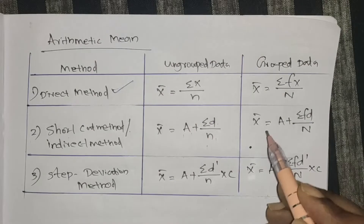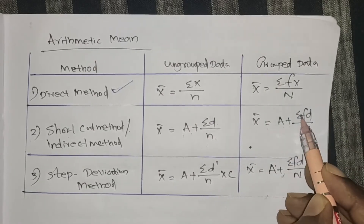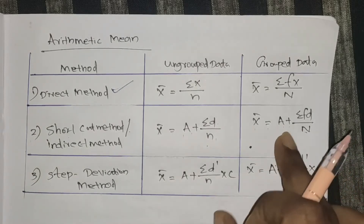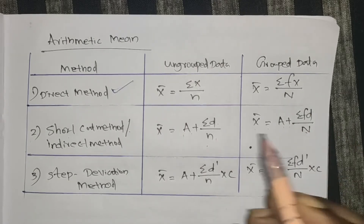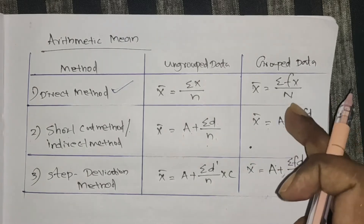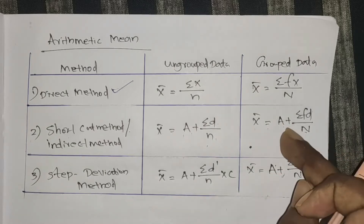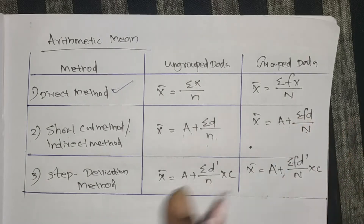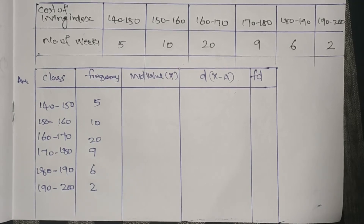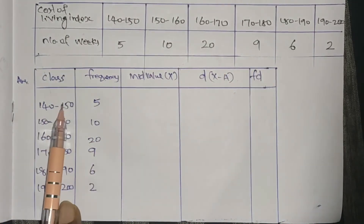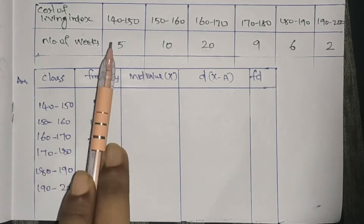We have to use the shortcut method equation for grouped data: x̄ equals A plus sigma fd divided by N. We set up the table with heading: class of cost of living index, frequency (number of weeks), and columns for mid value and d.